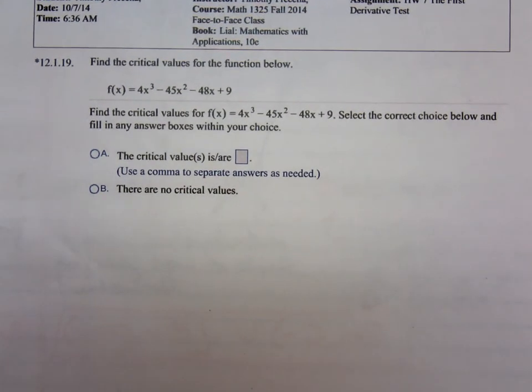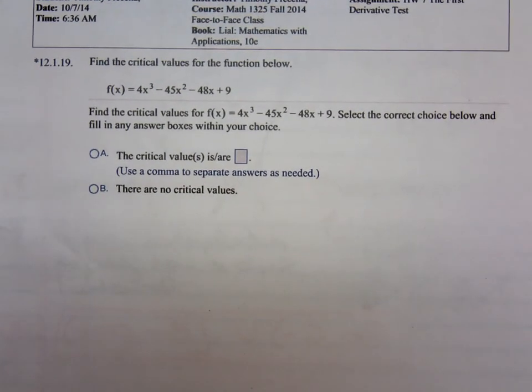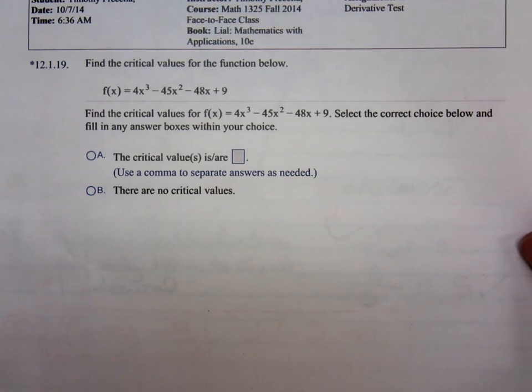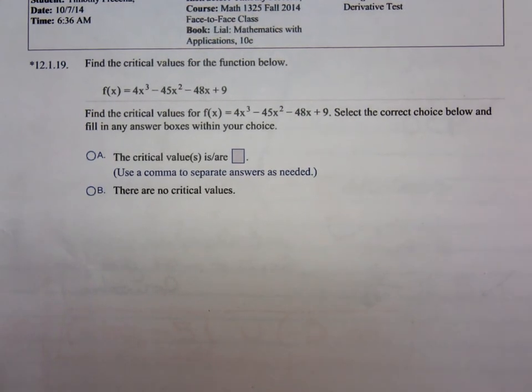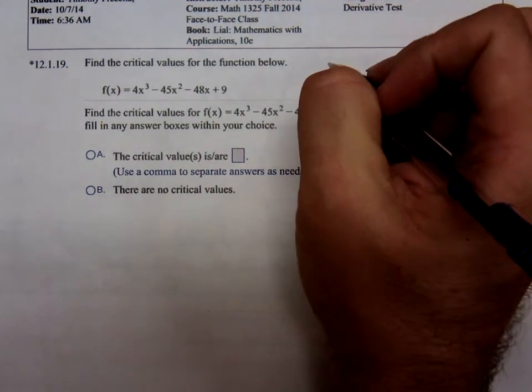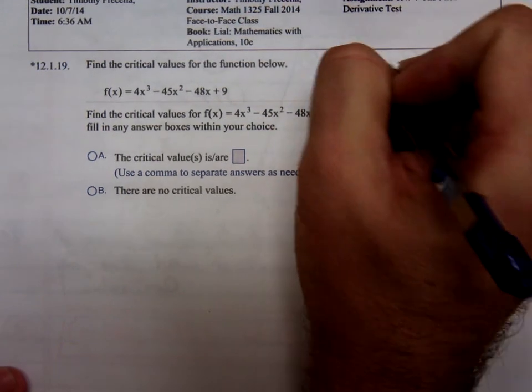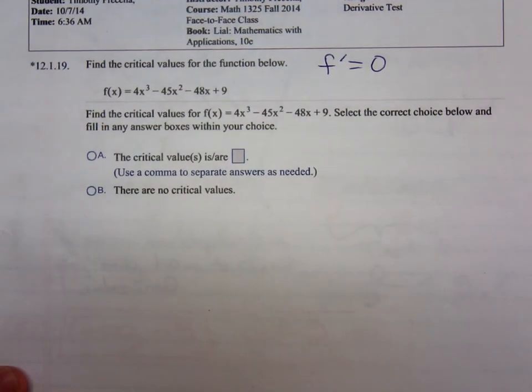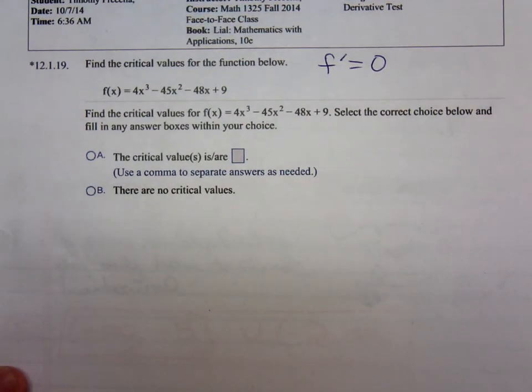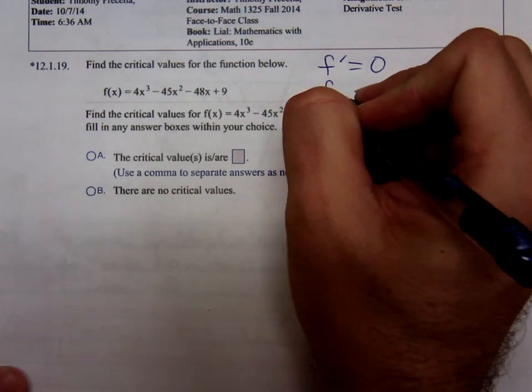Here we're given a function. We're told to find the critical values for the function. Remember the critical values of the numbers that are in the domain of which f prime is equal to 0, or what's the other situation? f prime is undefined.